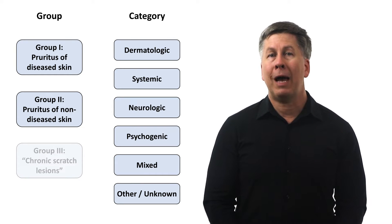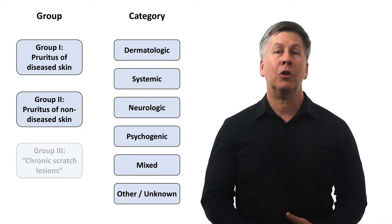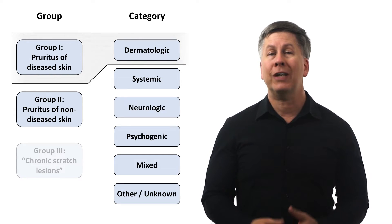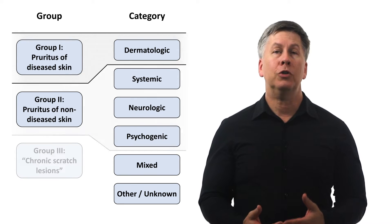The pruritus category can be mapped onto the group. For example, dermatologic conditions obviously map onto group 1, while systemic, neurologic, and psychogenic causes map onto group 2.